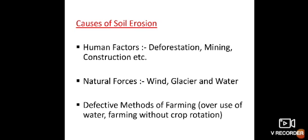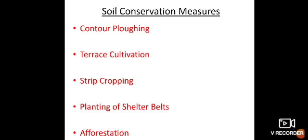So how can we conserve the soil? The following points can help control soil erosion: contour plowing reduces the flow of water and prevents soil erosion. In hilly areas, terrace farming should be followed. Strip cropping or strip farming helps to reduce the forces of wind. Planting of shelter belts — a line of trees planted to protect an area, especially in crop fields. Afforestation should be practiced on a large scale. Overgrazing by animals should be avoided.